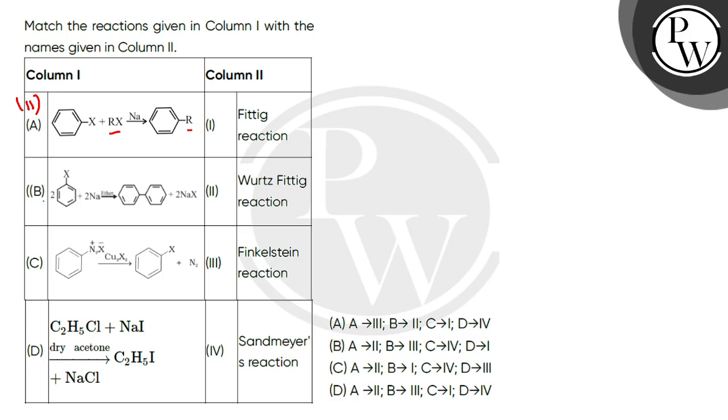In B, you are seeing 2 moles of aryl halide, 2 moles of sodium and ether. The two aryl groups are coupling. We call this Fittig reaction. So B matches with first.